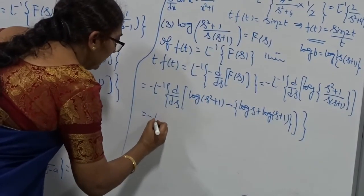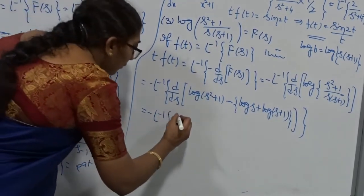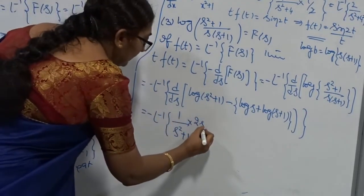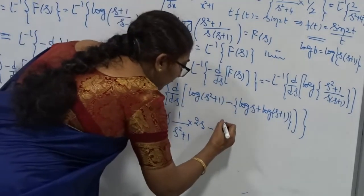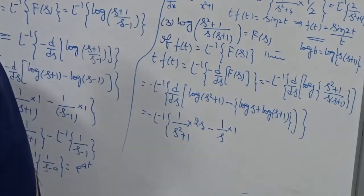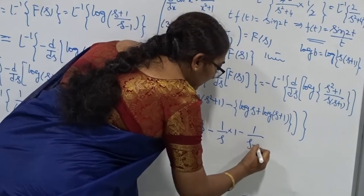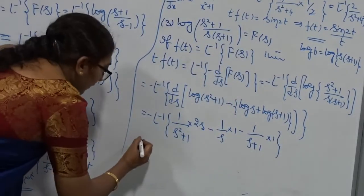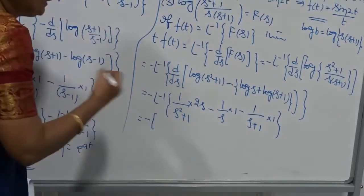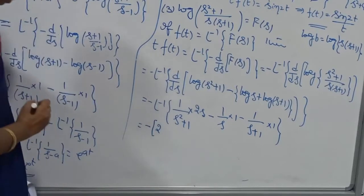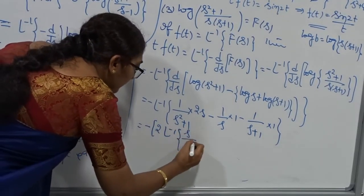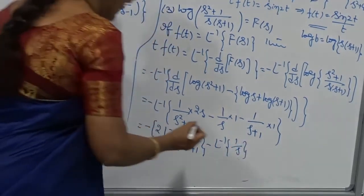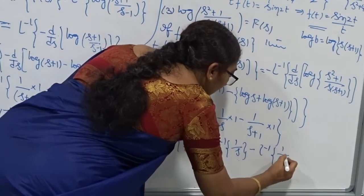Now differentiate term by term using the linearity property. Derivative of log(s²+1) is 1/(s²+1) times 2s, since derivative of s² is 2s and the constant is 0. Then minus derivative of log(s), which is 1/s times 1. Minus derivative of log(s+1), which is 1/(s+1) times 1. From the linearity property, taking the inverse of each term: keep 2 outside as a constant: L⁻¹ of s/(s²+1) minus L⁻¹ of 1/s, minus L⁻¹ of 1/(s+1).